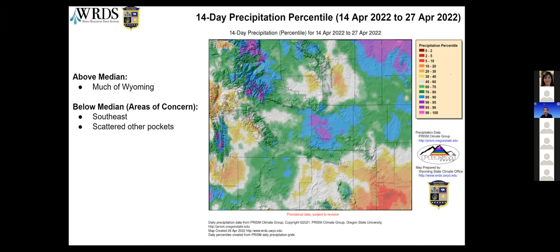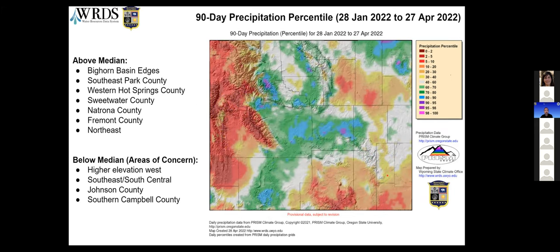There are some pockets in the yellows and oranges that have received less than median over the last two weeks. Especially down here in the southeast — Laramie County — which is down in the 5th to 10th percentile or less in some parts. Looking at that same type of map over the last 90 days, you can see a lot more red on the map, but some areas are showing up in the greens and blues: Carbon County, Sweetwater, Fremont, Natrona, and up into the Bighorns in the northeast. There are areas of concern in the west at higher elevation — the Wind, Tetons, coming down into Lincoln County, as well as the Sierra Madre and Medicine Bow. Laramie County is also in the red.